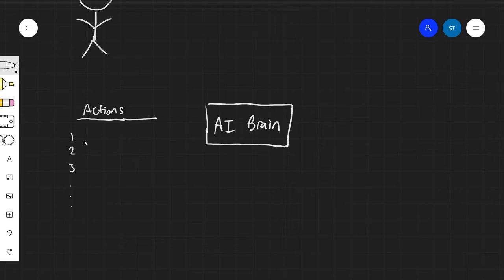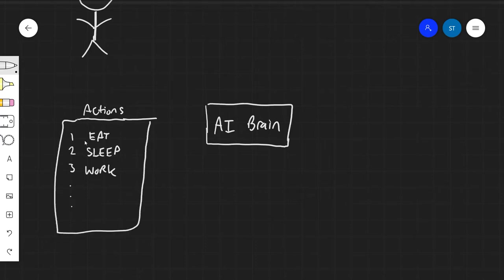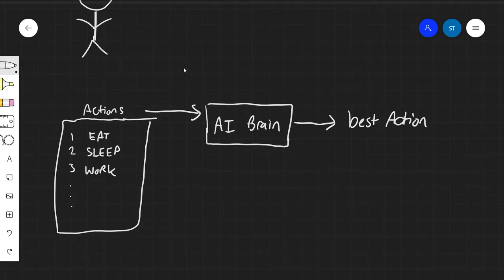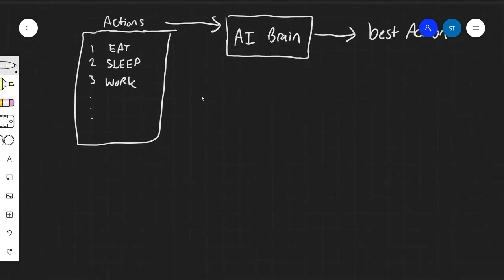Let's say one of the actions is eat, one of the other actions is sleep, and another possible action is to work. We're providing this list of actions to the AI brain, and the AI brain is going to process this list of actions and somehow spit back to us what is the best action. So let's dig a little bit deeper into what's going on here and take one of those actions and look at it.